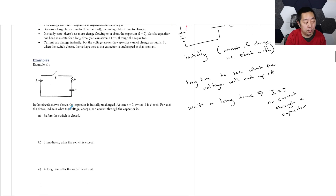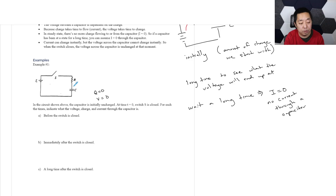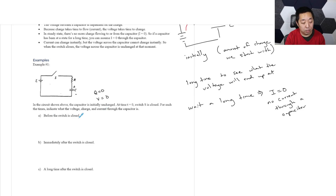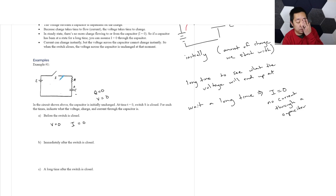Let's look at an example. In the circuit shown, the capacitor is initially uncharged — that means the voltage is zero, Q is initially zero, and since Q equals CV, the voltage is initially zero across the capacitor. At time T equals zero, the switch S is closed. Before the switch is closed, the voltage is zero and the current is zero, because there's no closed circuit and no charge on the capacitor, so Q equals zero.